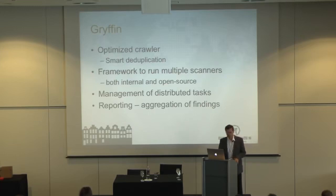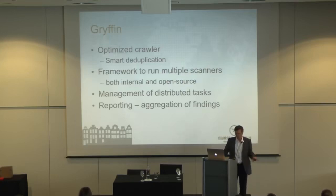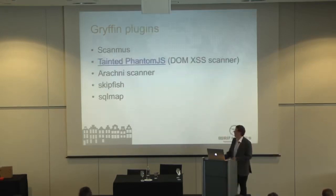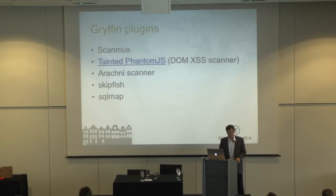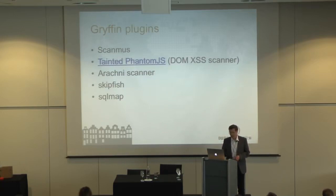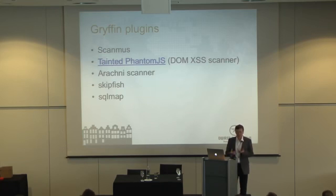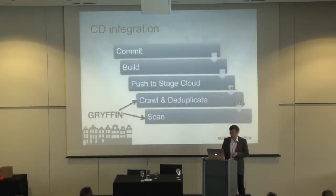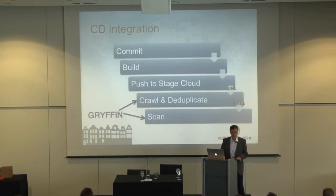Griffin is also a framework to run multiple scanners — both internal and open source. It manages distributed tasks so it has workers that run those plugins or scanners in parallel, and it aggregates the reporting. The current plugins are scanners: Taint and PhantomJS written by my teammates, Arachne, Skipfish, and SQLMap. We like running multiple scanners so we can benchmark them or cross-check them against each other and take the best from each one. This is how the integration works: you have a commit, then you crawl and deduplicate, and the results of those deduplications are sent to all the different scanners.